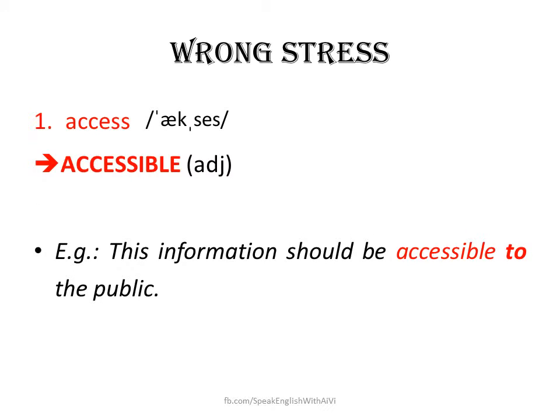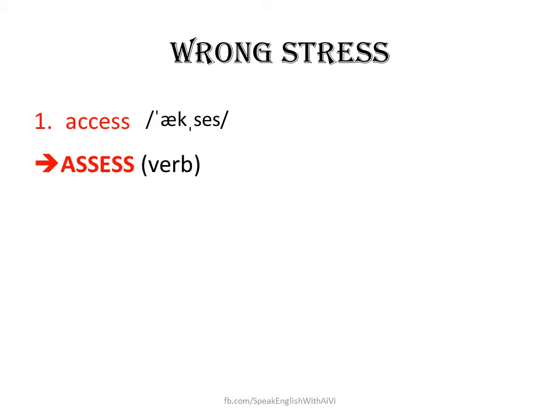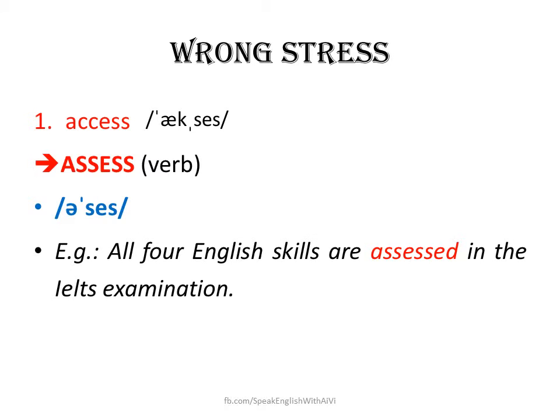We have access as a verb or a noun. And the adjective is accessible. Now listen to the example: 'This information should be accessible to the public.' A lot of people are confused about the two words. First, access. How about the second word? It's assess, with the stress on the second syllable. Let's listen to the example: 'All four English skills are assessed in the IELTS examination.' Assess is a verb.